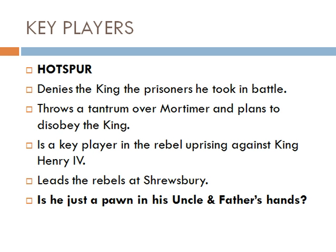Hotspur, one of the Percy clan, denies the king the prisoners he took in battle right at the start. He throws a tantrum over Mortimer and plans to disobey the king when told not to speak of Mortimer anymore. He is a key player in the rebel uprising against King Henry IV and leads the rebels at Shrewsbury. An important question to consider is whether Hotspur is just a pawn in his uncle and father's hands.